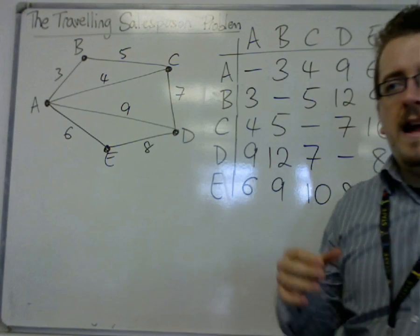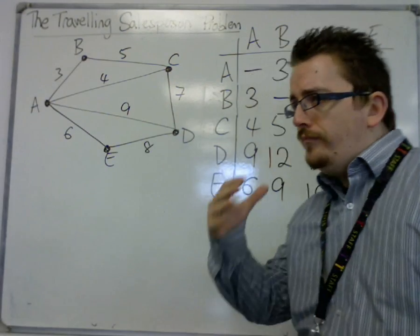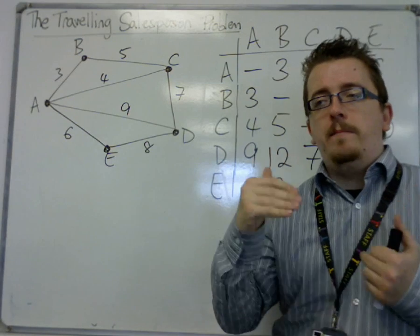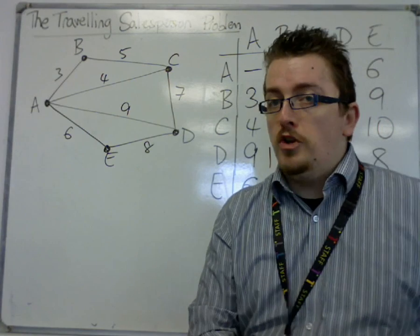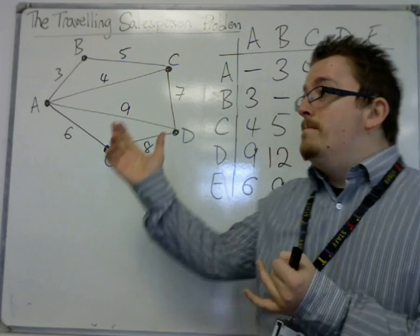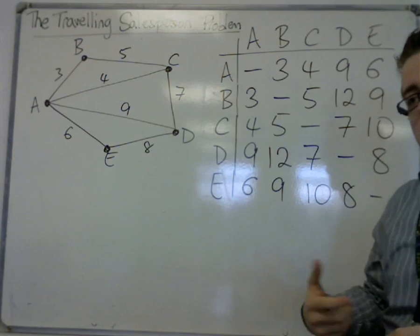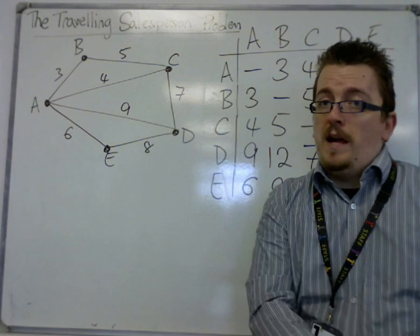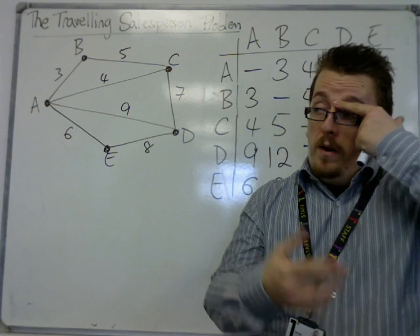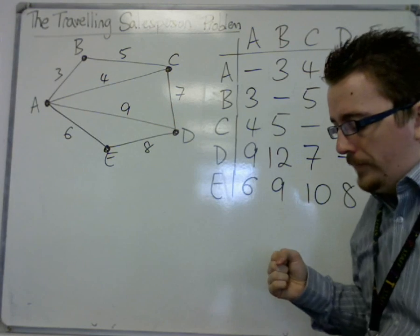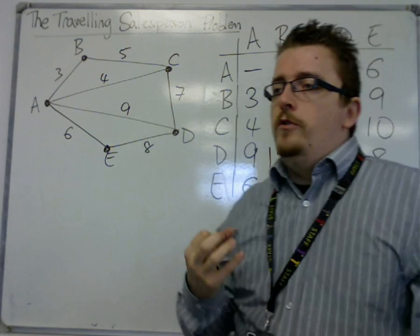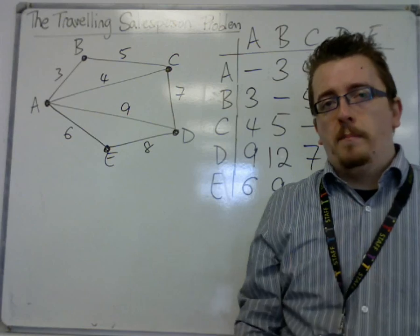In this video, we're going to look at the lower bound algorithm. We've gone through this step by step. We've introduced the traveling salesperson problem in general. Then we made the graph complete. Then we found an example of a Hamiltonian cycle just by inspection, just by looking at the graph or matrix. Then we used the nearest neighbor algorithm to give us an upper bound.